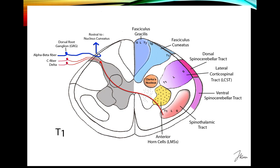Here is a cross-section of the spinal cord at T1 for a big-picture overview of the pathways. For sensory pathways, larger myelinated fibers entering the dorsal root ganglion travel through the dorsal root and ascend in the posterior columns — sometimes called dorsal columns. The medial portion is the fasciculus gracilis and the lateral portion is the fasciculus cuneatus. The fibers in the posterior columns convey largely vibration and proprioception.